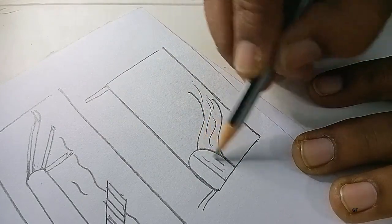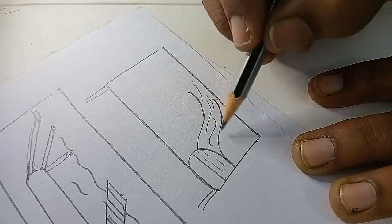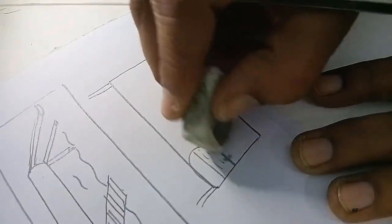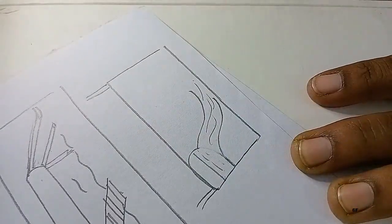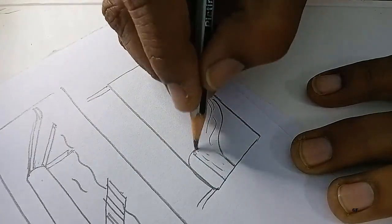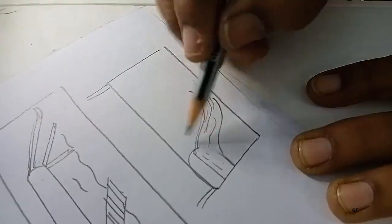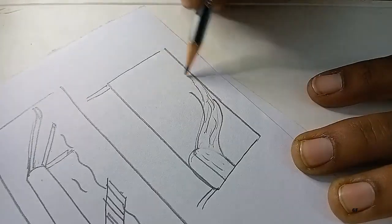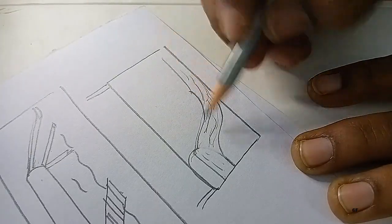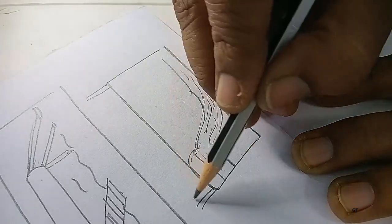Here water, this is a reservoir. We need to erase this. So from here water is flowing. This is a bridge.